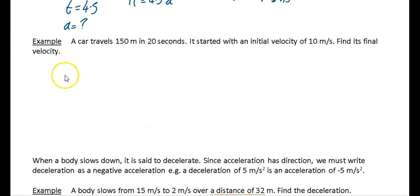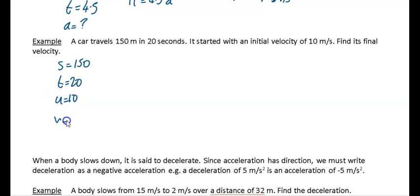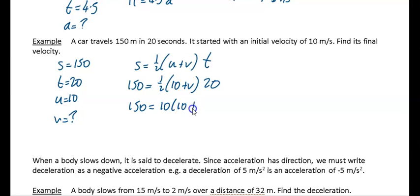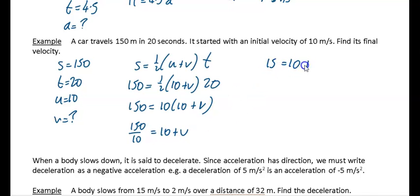A car travels 150 meters in 20 seconds with initial velocity 10 m/s — find the final velocity. So s = 150, t = 20, u = 10, find v. Use s = ½(u + v)t: 150 = ½(10 + v)(20) = 10(10 + v). Dividing both sides by 10: 15 = 10 + v, so v = 5 meters per second.